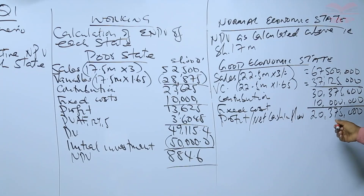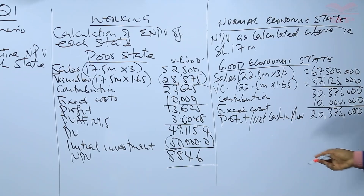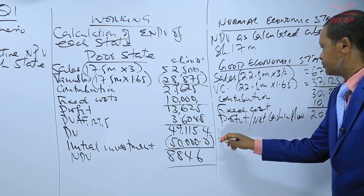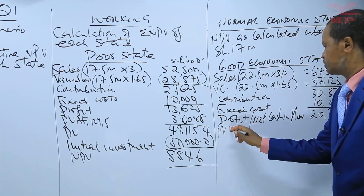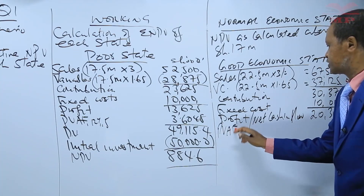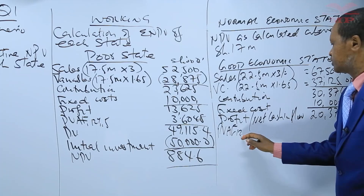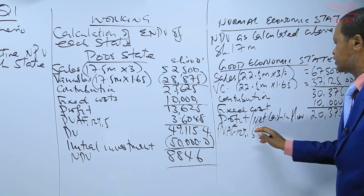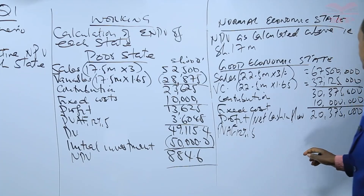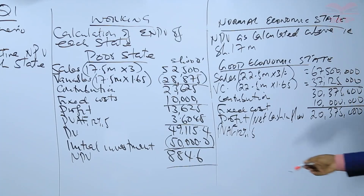We discount by applying the present value annuity factor at 12 percent for 5 years, which is 3.6048.